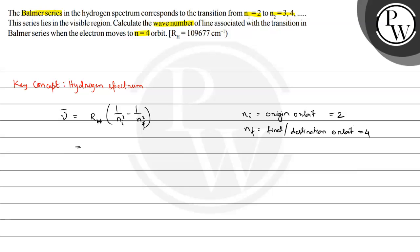The calculation proceeds like this: This is Rₕ multiplied by 1 by nᵢ squared, that is 1 by 2 squared, minus 1 by nf squared, that is 4 squared. This equals Rₕ multiplied by 1 by 4 minus 1 by 16, which equals Rₕ multiplied by 3 by 16.